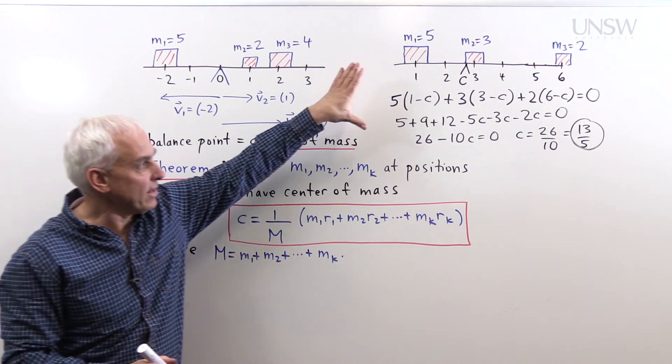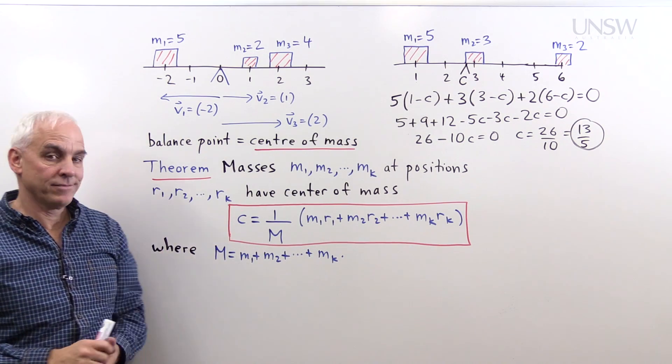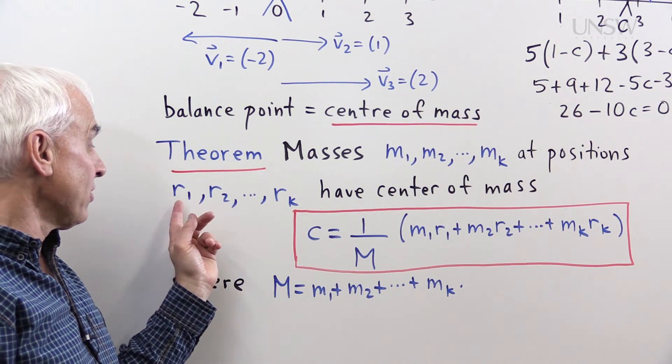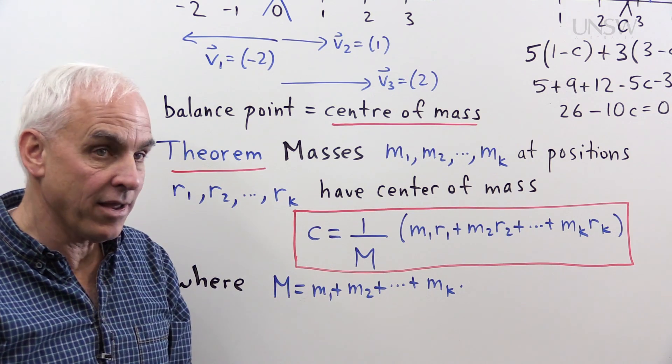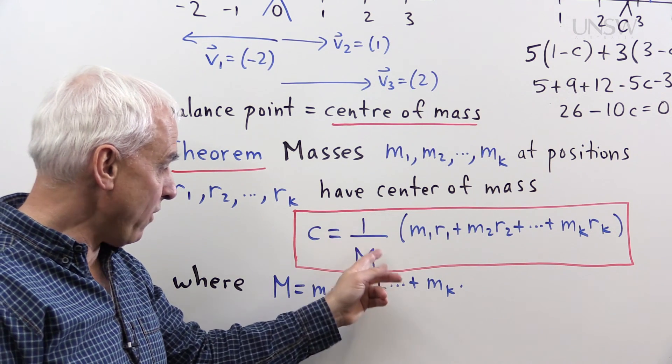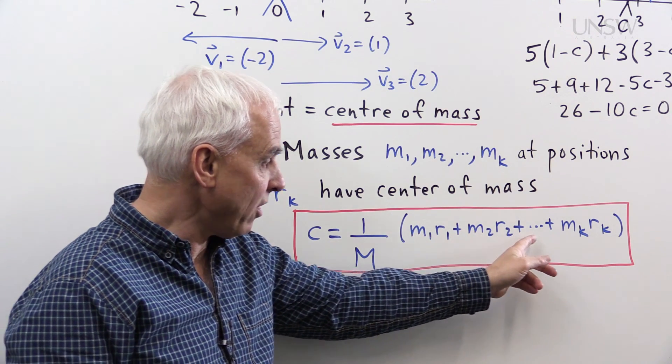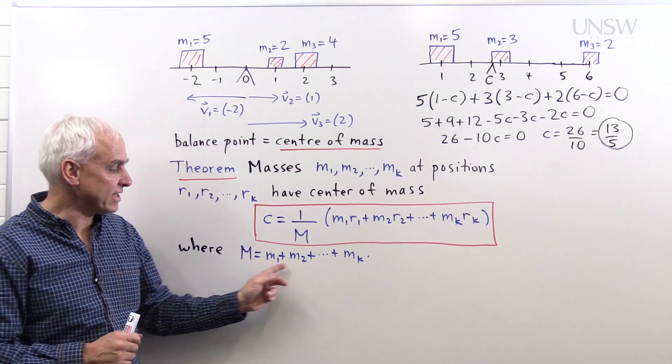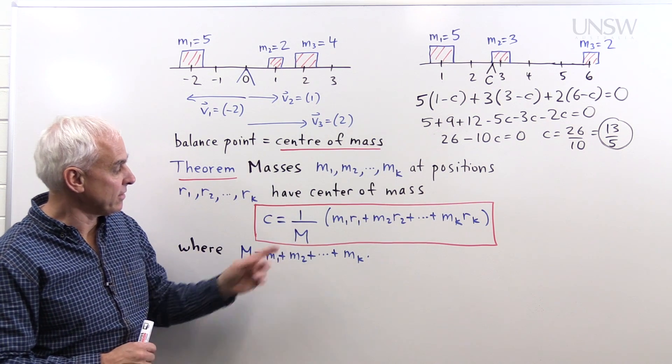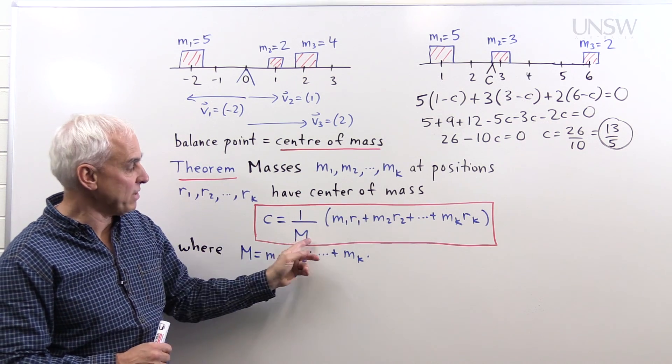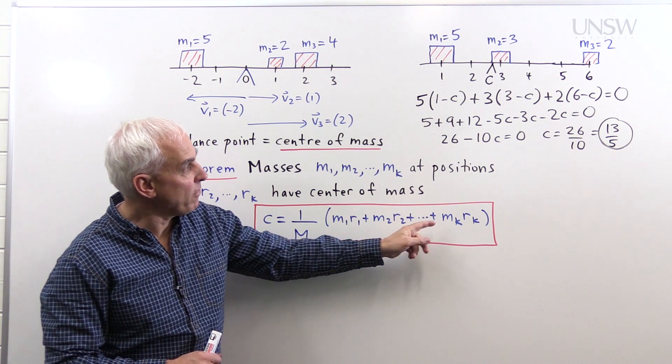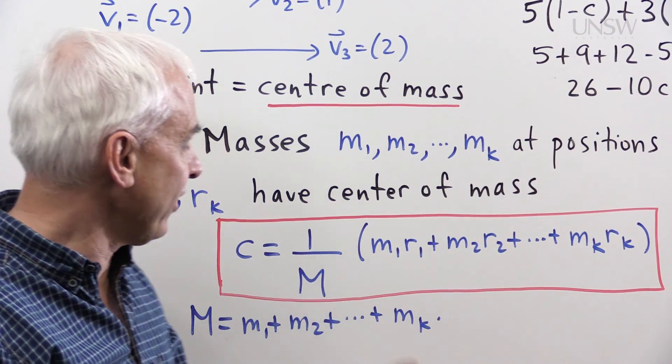In general, exactly this kind of reasoning allows us to deduce this theorem. Very important theorem that says that if you have masses M1, M2 up to Mk at positions R1, R2 up to Rk, then the center of mass of that configuration is this point C. It's one over capital M times M1 R1 plus M2 R2 all the way up to Mk Rk, where capital M is the sum of the masses. So if we had used that formula in this case here, we would have had to take 1 over capital M. The sum of the masses would be 10. And this sum here would have been 5 times 1 plus 3 times 3 plus 6 times 2. That would have totaled 26 over 10.